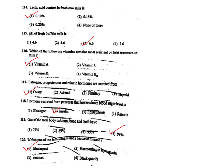Q117. Estrogen, progesterone, and relaxin are secreted from the ovary. The correct answer is option 1.